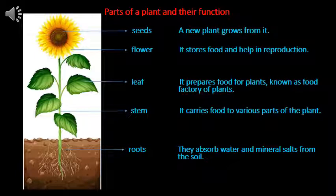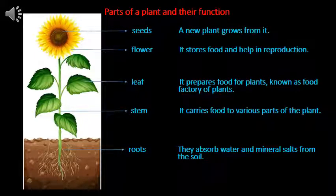Stem is the main part of the shoot system. It makes the plant stand upright. Stem carries water and mineral salts from the roots to the leaves. It also carries the food prepared by the leaves to various parts of the plant.